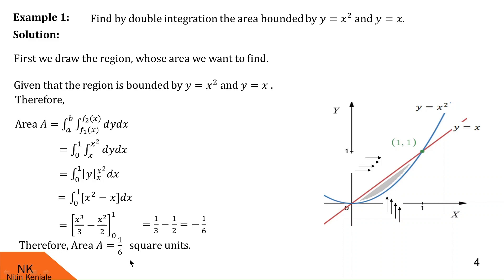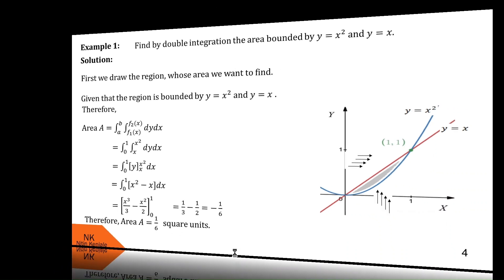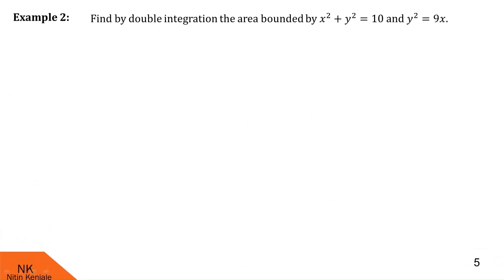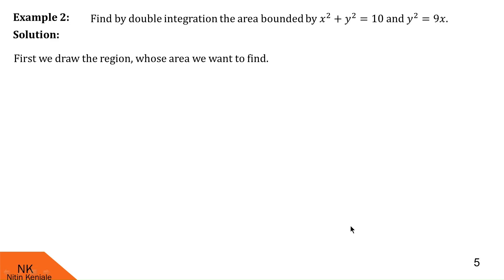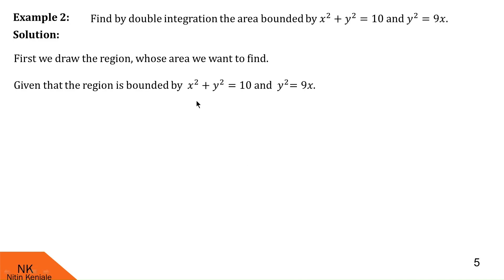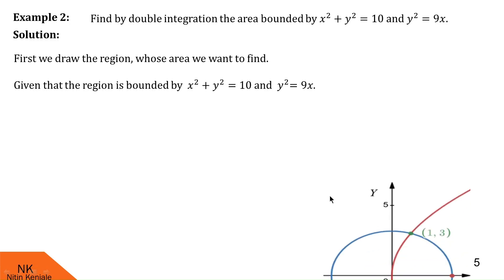I hope you understood this concept. Now let us proceed to the second example. Here we are asked to find the area by double integration bounded by x² + y² = 10 and y² = 9x. Let us first draw the region whose area we want to find out. The region is bounded by the circle x² + y² = 10 and the parabola y² = 9x.